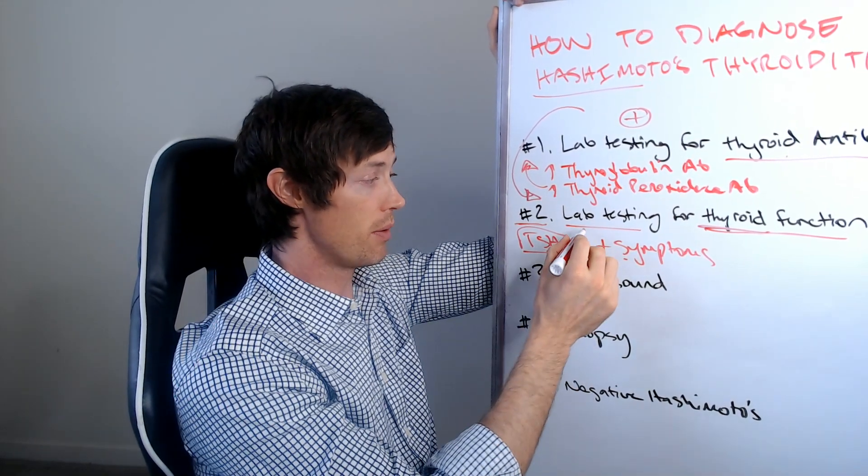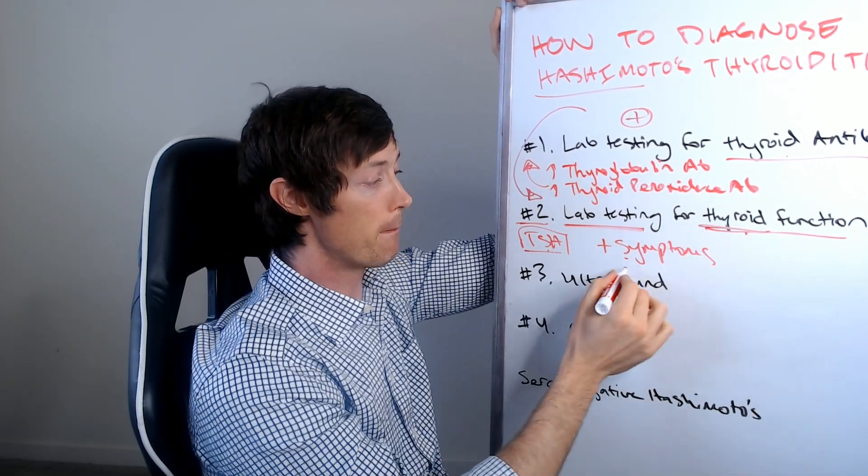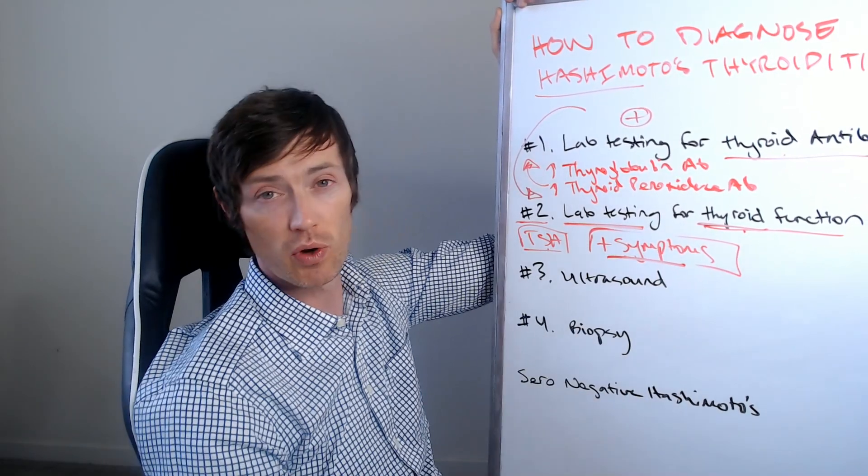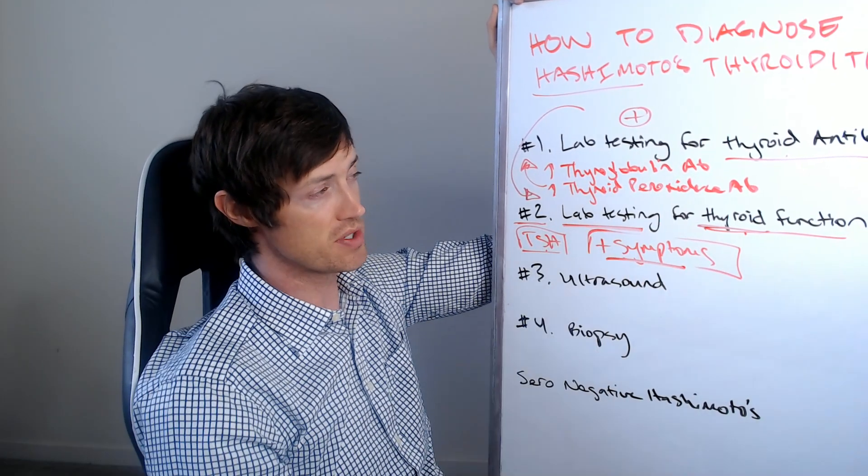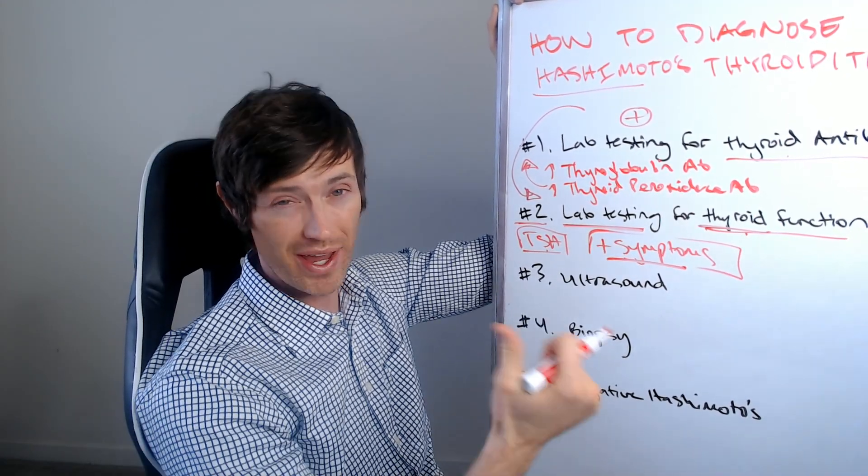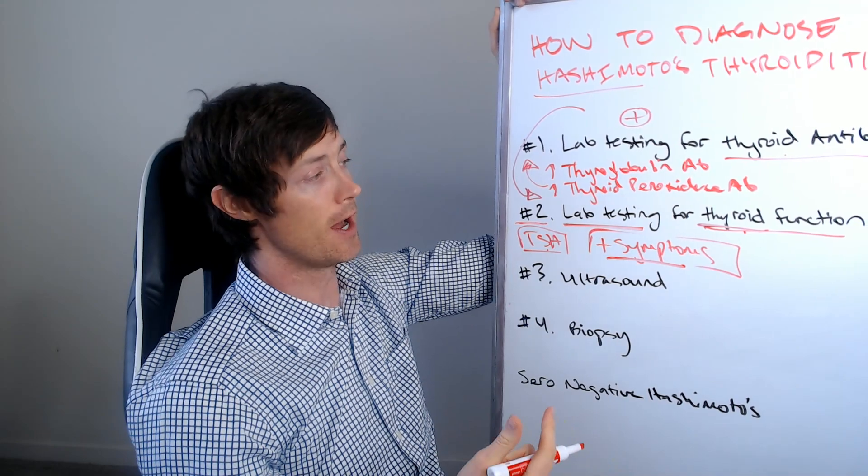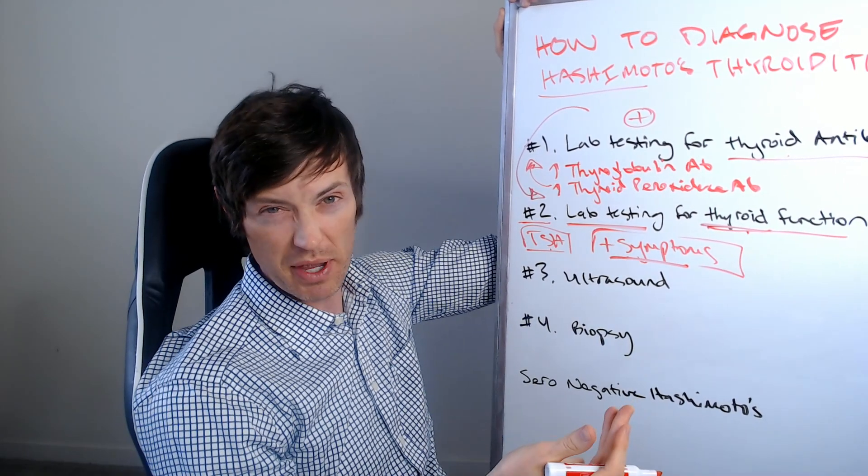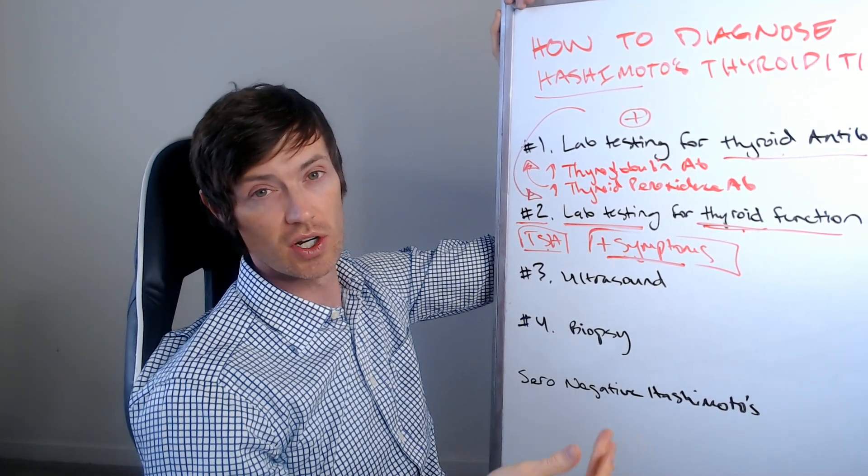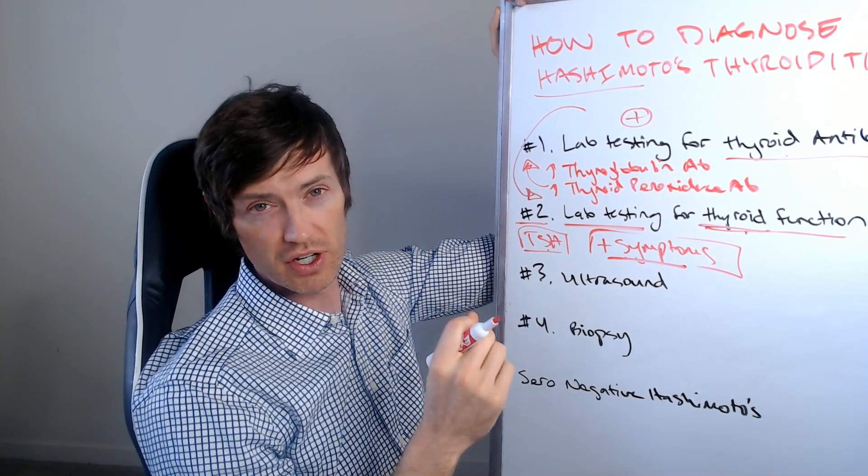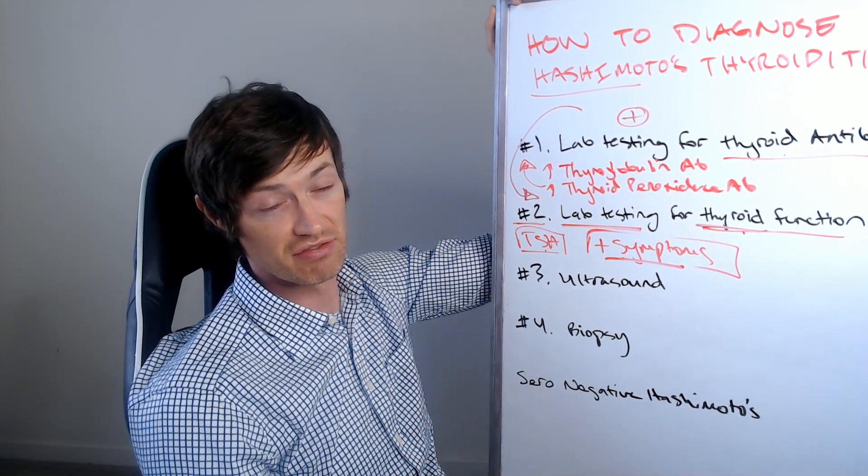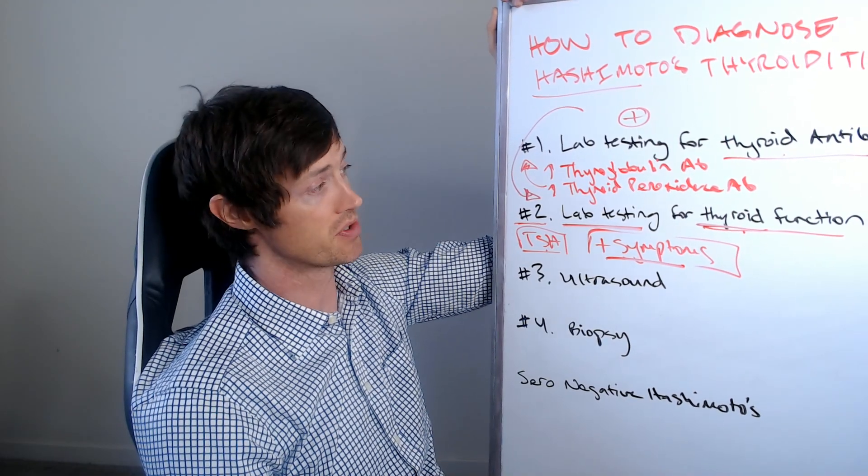You must accompany them with lab testing for thyroid function, plus an assessment of how you are feeling. If you have the presence of those antibodies, plus you're experiencing things like weight gain, hair loss, fatigue, you're having constipation, cold intolerance, all those symptoms, problems with your fingernails, eyebrow hair loss, et cetera, then that is a very high likelihood that you have Hashimoto's thyroiditis.